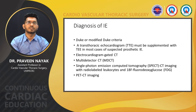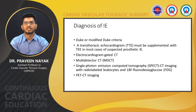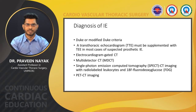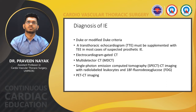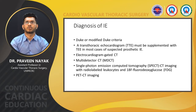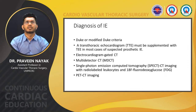Diagnosis of infective endocarditis is essential for surgical planning. Diagnosis is based on clinical symptoms, physical findings, microbiological results, echocardiography, and other studies. Physical findings include the Duke or modified Duke criteria. A transthoracic echo must be supplemented with transesophageal echo in most cases of suspected prosthetic infective endocarditis. Transesophageal echo should be considered early when organisms with high likelihood of pyogenic complications are implicated, or when there is a question about valve infection based on the quality of transthoracic images.